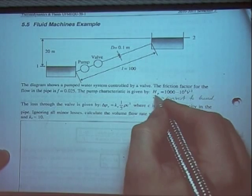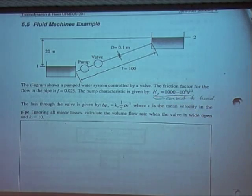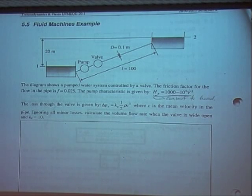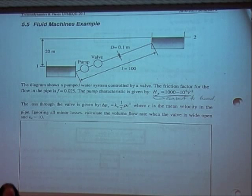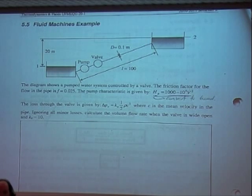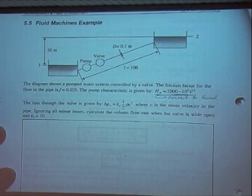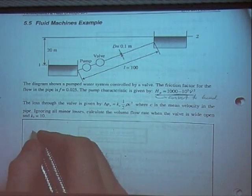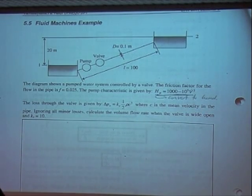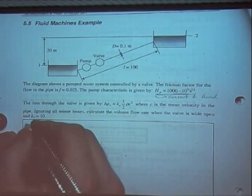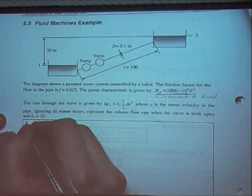Notice we've been given the pipe characteristic, and it's been given in terms of head. Head is a distance, and to convert that to a pressure we need to multiply by rho times g. We're dealing with a system with water, and so we can write down the pump characteristic straight off.